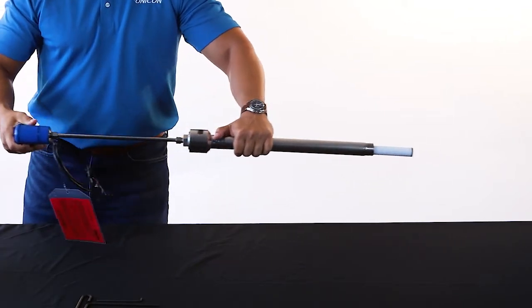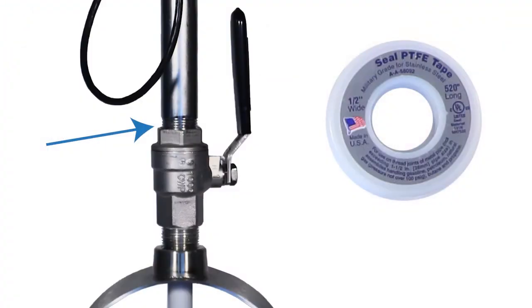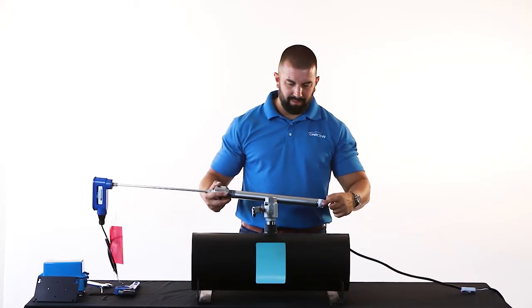Fully retract the flow sensor into the hot tap adapter fitting. Apply thread seal tape to the 1 inch adapter threads, ensuring no tape extends beyond the end of the hot tap adapter.